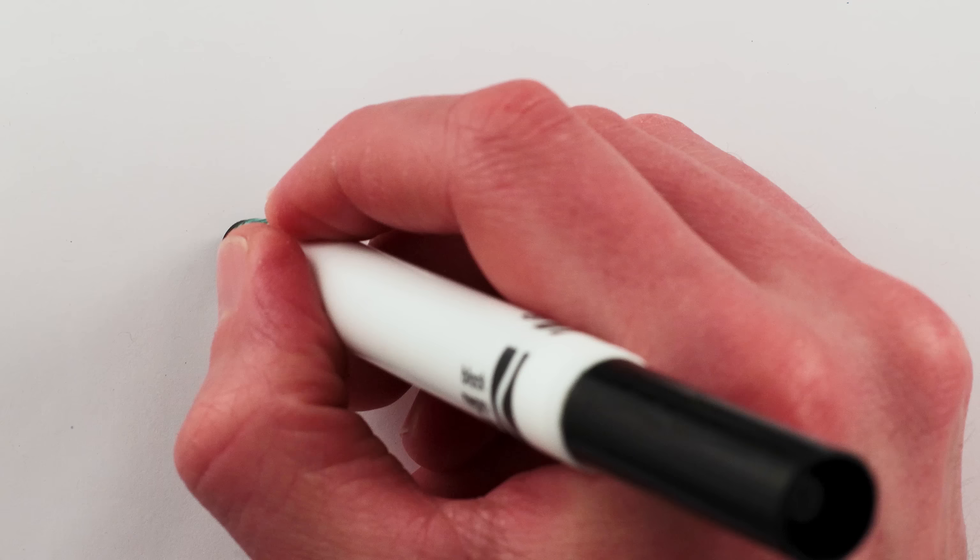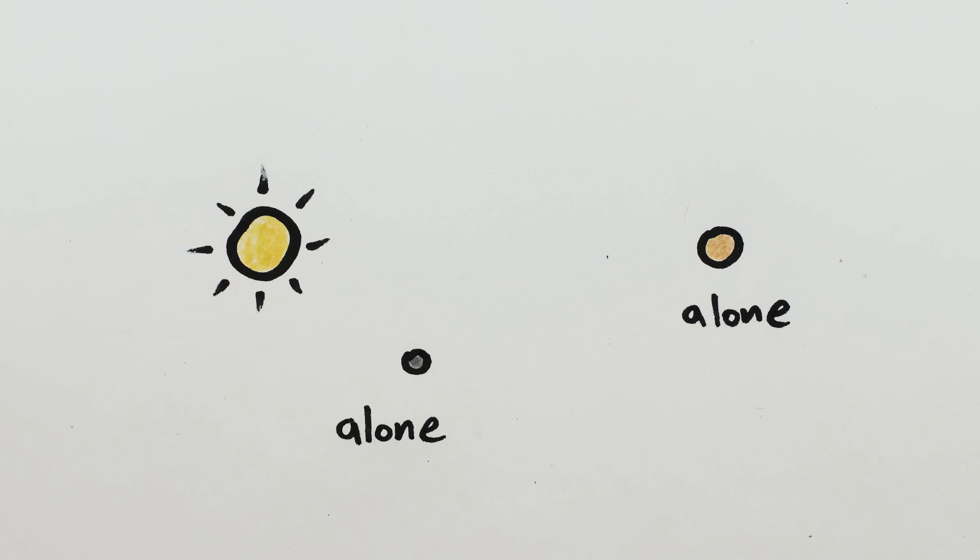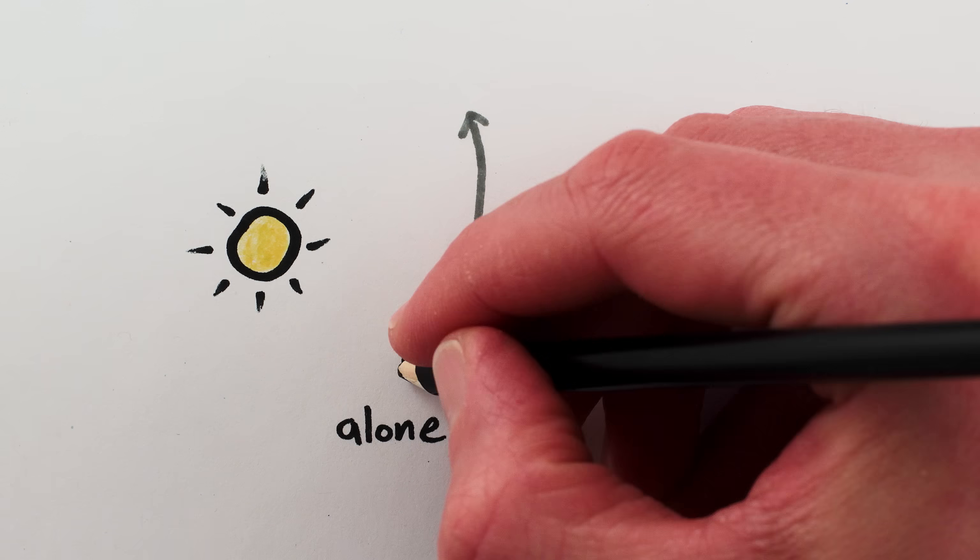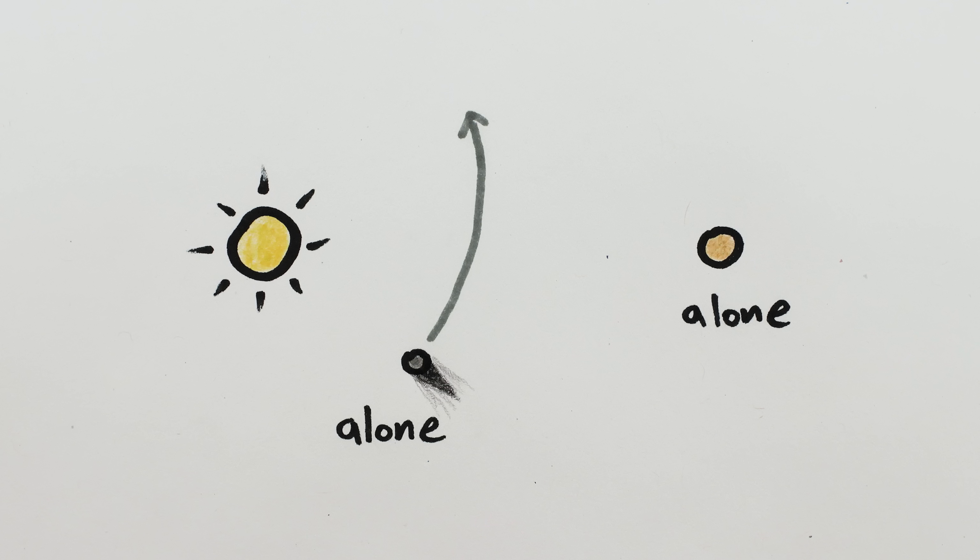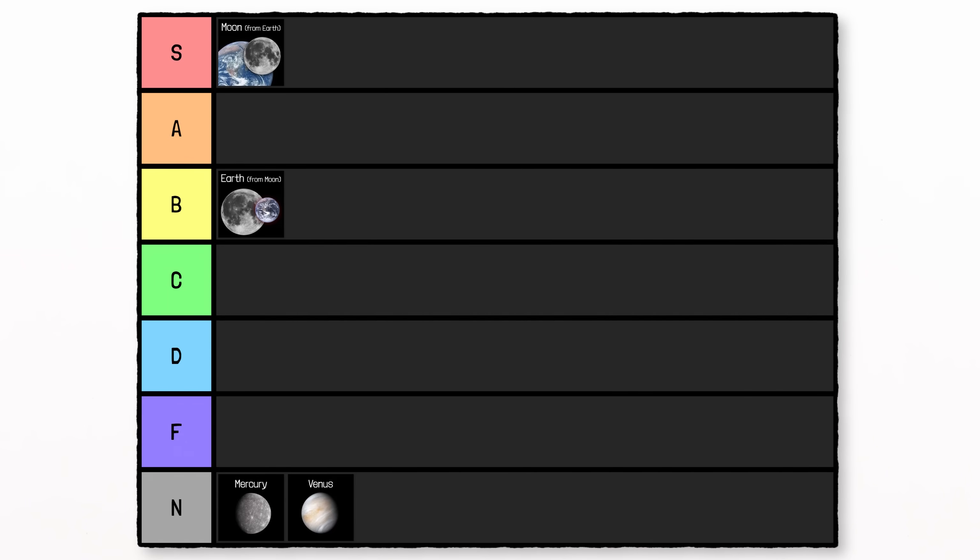Mercury and Venus are next. No moons means no eclipses, unless you count the fact that Mercury sometimes passes between the sun and Venus, but it's way too small to do anything we'd remotely consider to be eclipse-like. N-tier for no eclipses.